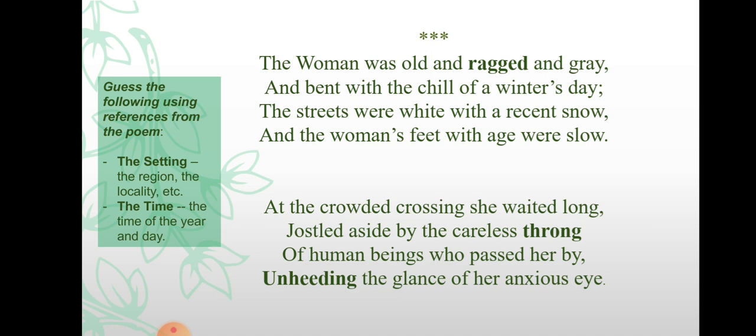In the last line of the first stanza, 'and the woman's feet with age were slow,' the figure of speech is inversion. Wonderful use of inversion is made throughout this poem for good effect — the normal order would be 'the woman's feet were slow with age.' The rhyming words are grey/day and snow/slow, giving this stanza a rhyme scheme of AABB.